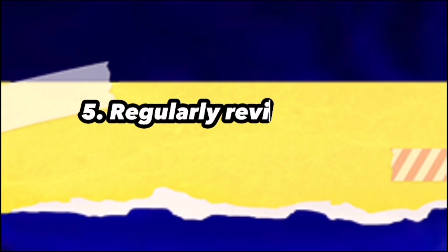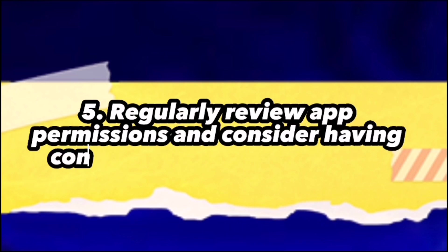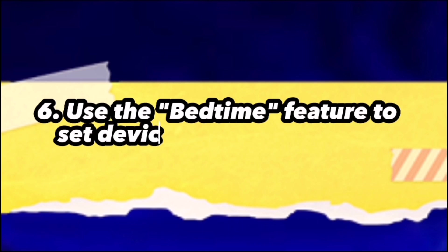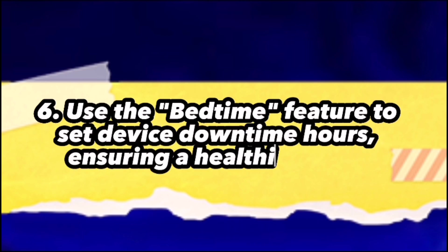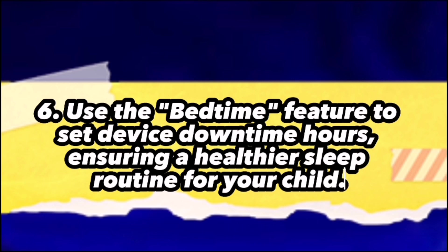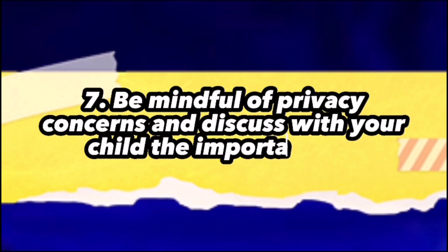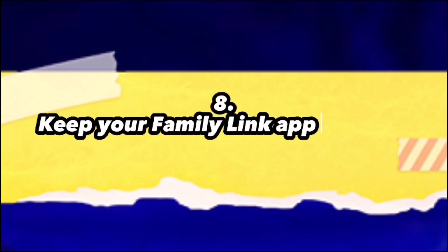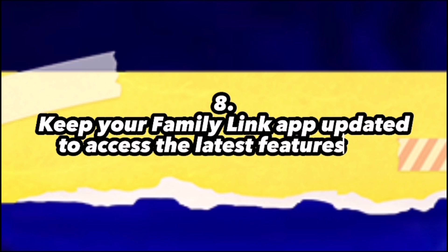Five: Regularly review app permissions and consider having conversations with your child about responsible device usage. Six: Use the Bedtime feature to set device downtime hours, ensuring a healthier sleep routine for your child. Seven: Be mindful of privacy concerns and discuss with your child the importance of responsible internet behavior. Eight: Keep your Family Link app updated to access the latest features and security improvements.